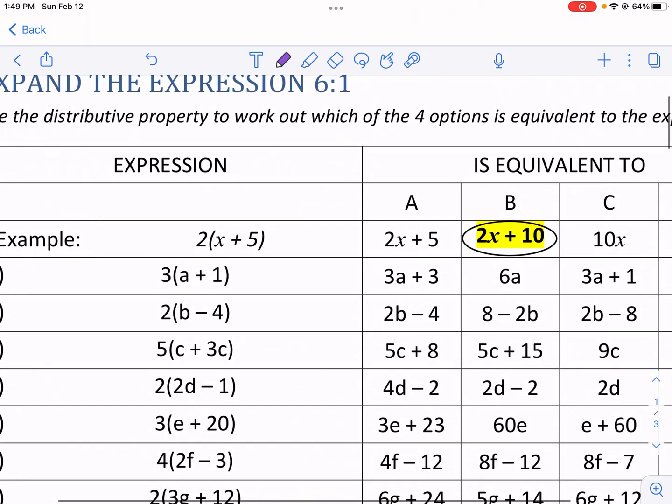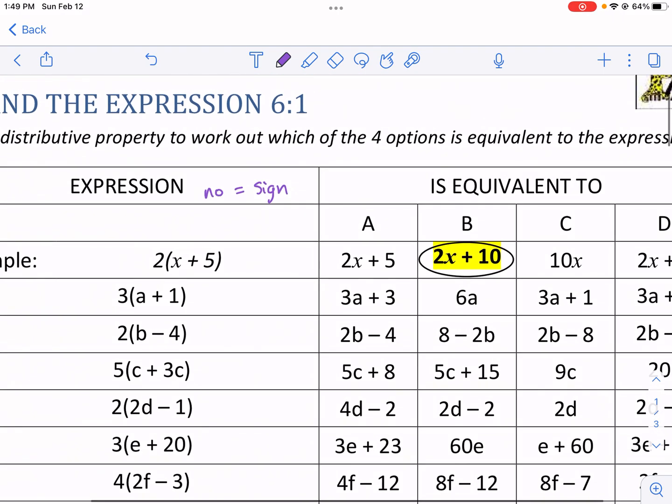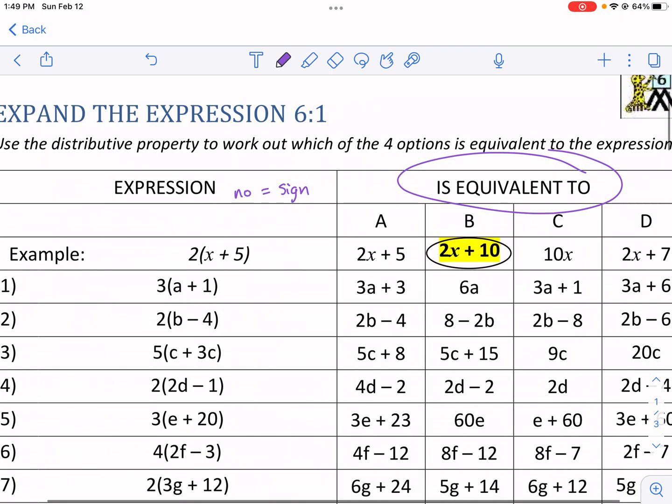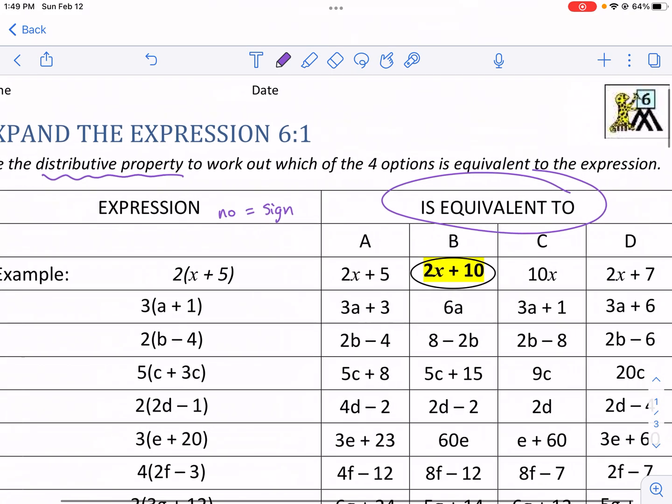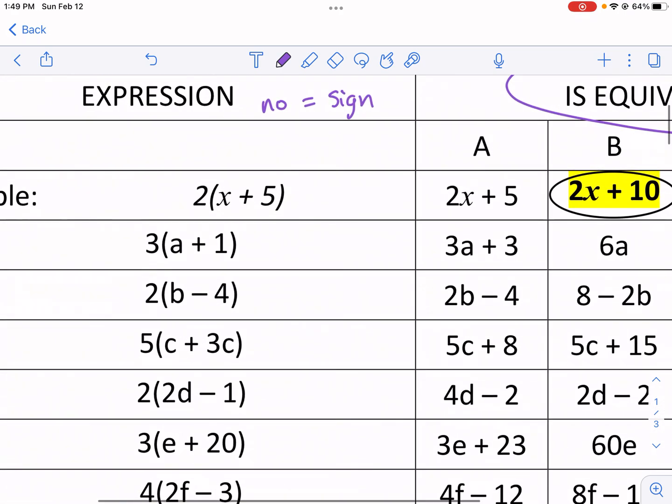tons of great resources available. So let's go ahead and start on this one. This is talking about expressions. That means no equal sign. Anytime it's an expression, it means there's no equal sign, and we don't solve them. We simplify them, or we can evaluate them. But this one, we're trying to see which expressions are equivalent to them by using the distributive property. That's what we're going to do here, and it's multiple choice, so it should be a lot more simple than just without multiple choice.